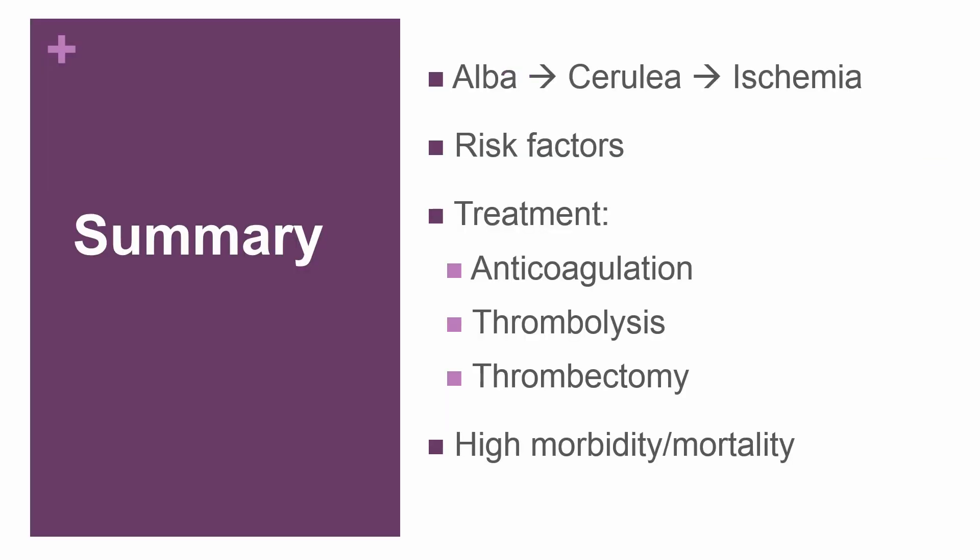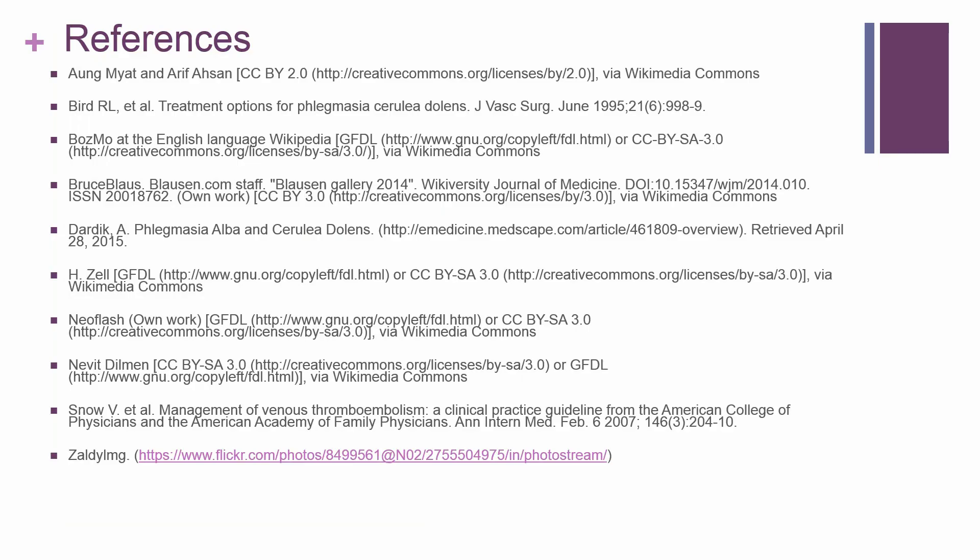In summary, phlegmasia alba dolens — or white leg — is the deep DVT system without the collaterals, but can progress to cerulea, which can progress to ischemia and gangrene. You can anticoagulate patients with high-intensity heparin, but they may need thrombolysis and thrombectomy. Even then, they still have high morbidity and mortality — up to 20 to 40 percent — and may need amputations. When you see a deep purple leg like this, take it very seriously. Thank you for your attention, and I hope you have a great day.